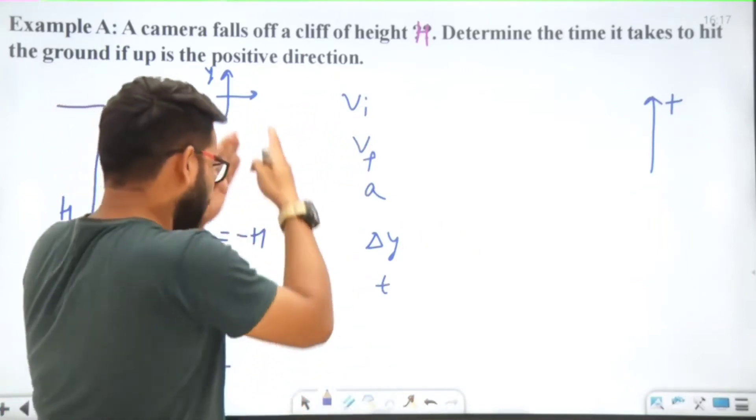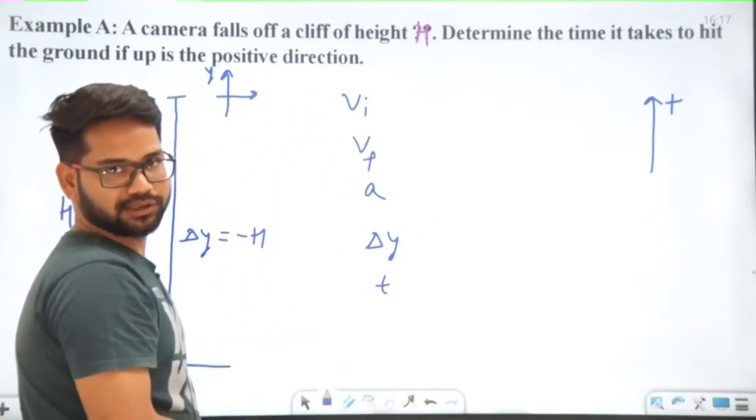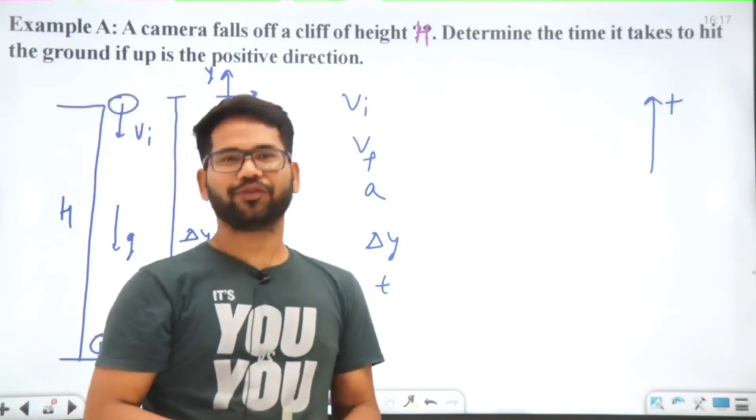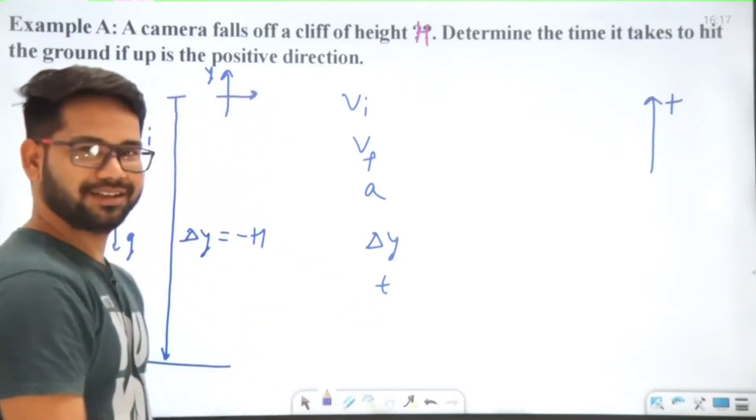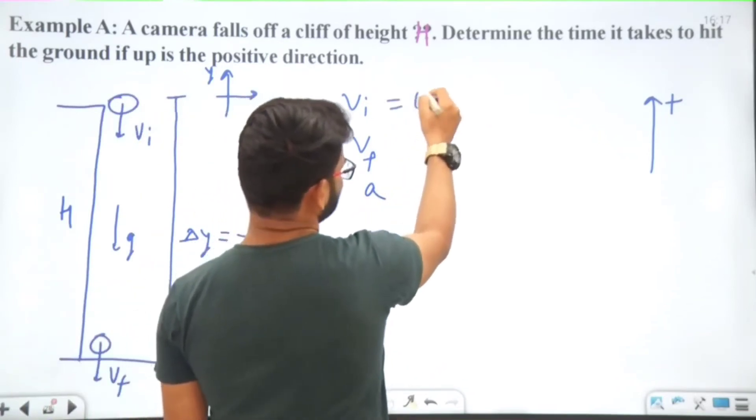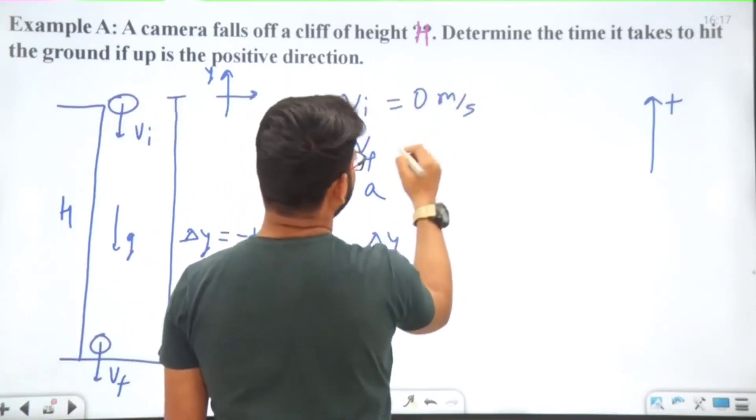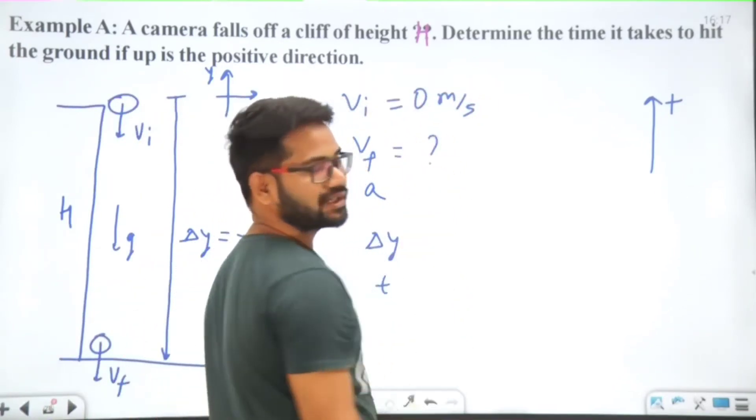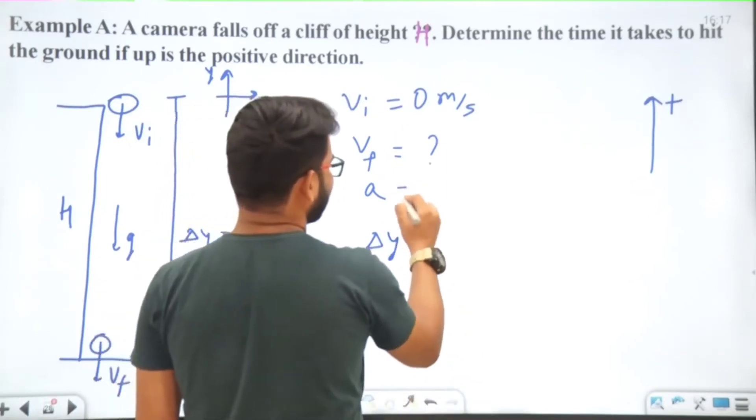Initial velocity we have as zero, final velocity we have to calculate, and a is minus G meters per second squared. Delta Y is minus H.